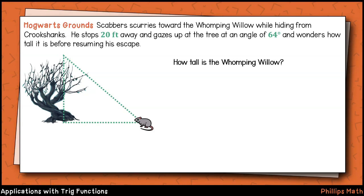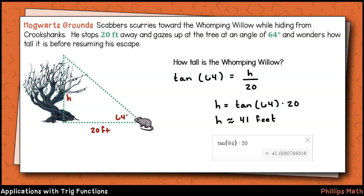We can answer that question with the tangent function. The height of the tree is the side opposite Scabbers' angle of elevation, which is 64 degrees, and we are given the distance between him and the tree. That's 20 feet. We set this up as tangent of 64 degrees equals the height over 20. To solve for the height, just multiply both sides of the equation by 20. We have the height equals tangent of 64 degrees times 20, and it looks like the whomping willow is about 41 feet tall.